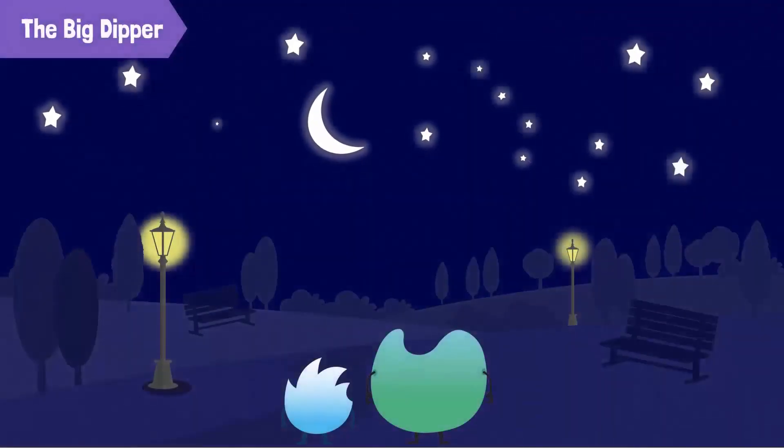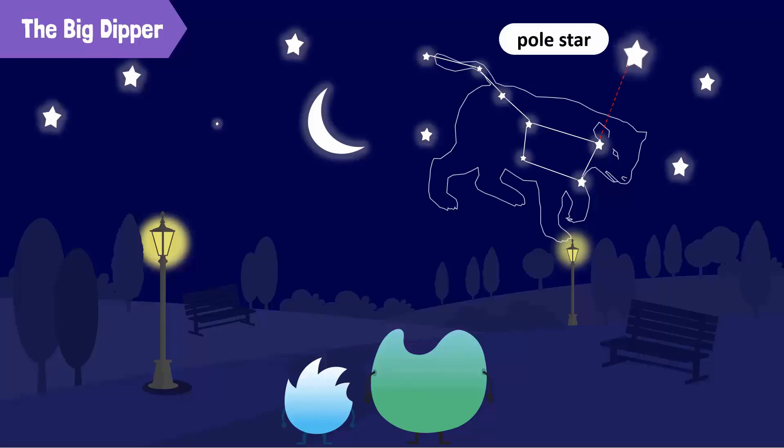The Big Dipper. The Big Dipper is a famous constellation of seven stars. Four stars make the bowl and three stars form its handle. The Pole Star is located just north of the Big Dipper and helps in navigation at night.